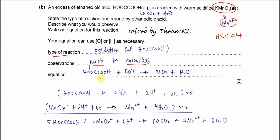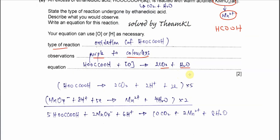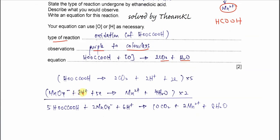For the equation, you can write the simple form: ethane dioic acid reacts with the oxidizing agent KMnO₄ and is oxidized to form CO₂ and H₂O only. If you want the ionic equation, construct two half equations. For ethane dioic acid: it forms 2CO₂, balance oxygens and carbons, then add 2H⁺ on the right and 2 electrons to balance the charge.